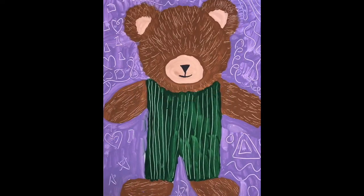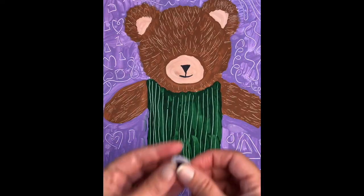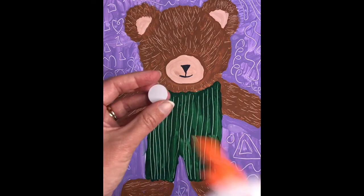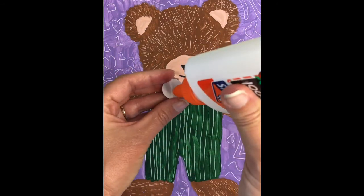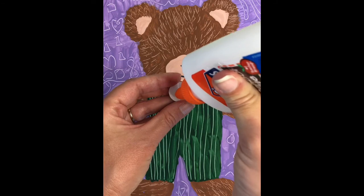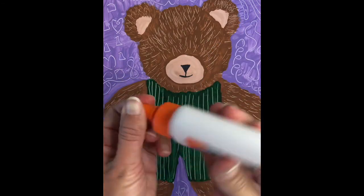Next, we want to find something that would work for the eyes. If you've got some wiggle eyes at home, that would be perfect. Use the squeezy kind of glue to put those on and make those stay.